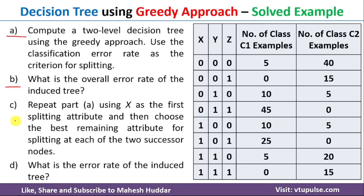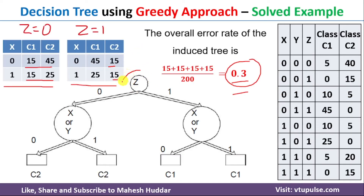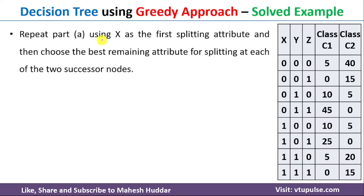Now in this video, I will discuss how to build the decision tree by considering X as the root node, and then how to calculate the error rate for this particular tree. In the previous case, we calculated the classification error rate — Z was having the minimum error. So that's the reason we considered Z and built the decision tree. Now we need to solve the same example by considering X as the first node, or the root node, because in the previous case we calculated the error for all these attributes and Z had the minimum error.